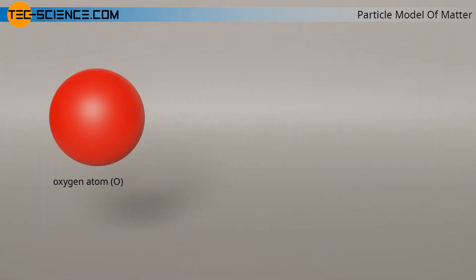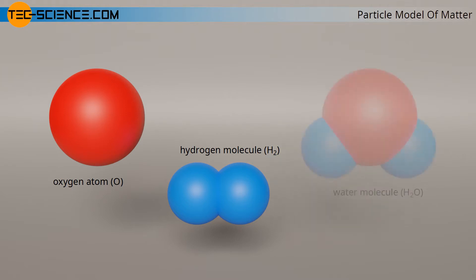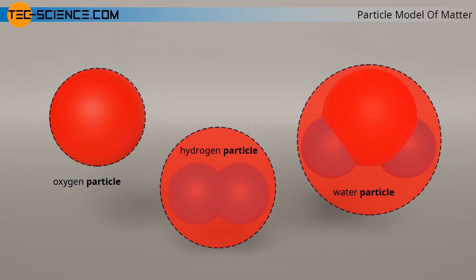For example, not only a single oxygen atom is called a particle, but also molecular hydrogen, which is composed of two hydrogen atoms. Even larger molecules such as the water molecule are regarded in the particle model as a single particle, which in turn is composed of individual particles, namely two hydrogen atoms and one oxygen atom.